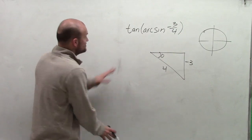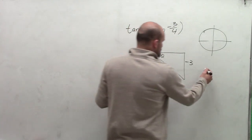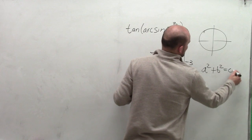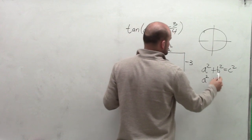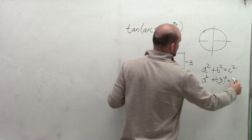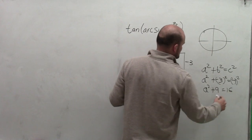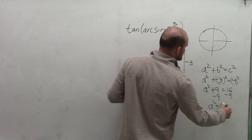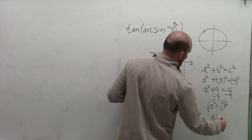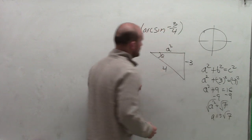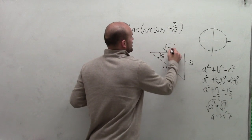Since I'm determining what the tangent is of this angle, I need opposite over adjacent. So I need to figure out what my adjacent side is using the Pythagorean theorem. I have a squared plus b squared, where b is negative 3, equals 4 squared — my hypotenuse. So a squared plus 9 equals 16. Subtract 9, and I get a squared equals 7. Taking the square root of both sides, a equals plus or minus the square root of 7. Since this side length is positive, I'll use the positive square root of 7.